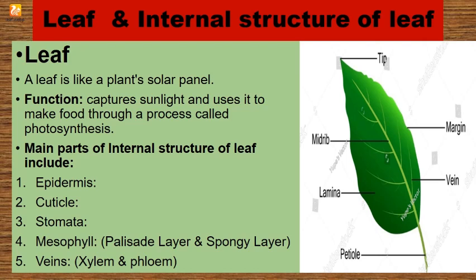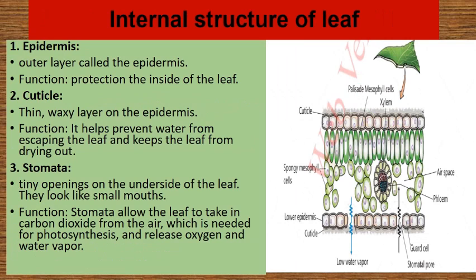The main parts of the internal structure of a leaf include: 1. Epidermis, 2. Cuticle, 3. Stomata, 4. Mesophyll — palisade layer and spongy layer, and 5. Veins — xylem and phloem. Now I will explain the internal structure of the leaf and its parts one by one.